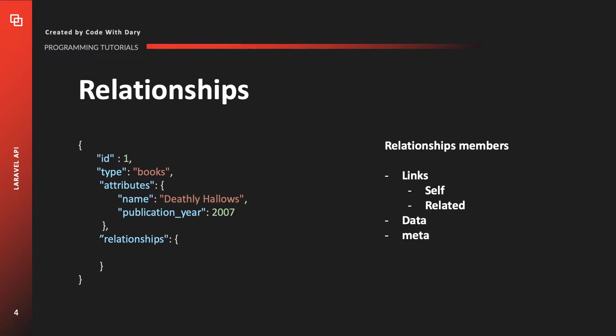Sometimes you need to create a relationship inside your API because data in an application can be related to one another. A book belongs to one or more authors, and an author can have many books. I expect that by now you understand how relationships work in code, especially in Eloquent. When it comes to relationships in your API, we are going to define the relationships member, as you can see here. Like the attributes member, the relationships member needs to be placed at the root of your resource object, and it has a couple of rules. One of them is adding at least one of the following members.